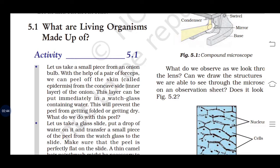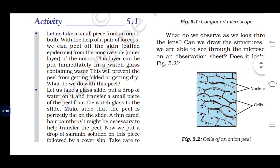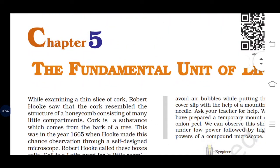What do we do with this peel? Let us take a glass slide, put a drop of water on it, and then transfer a small piece of peel from the watch glass to the slide. Make sure that the peel is perfectly flat on the slide. A thin camel hair paintbrush might be necessary to help transfer the peel. Now we put a drop of safranine solution on the piece, followed by a cover slip. Take care to avoid air bubbles.